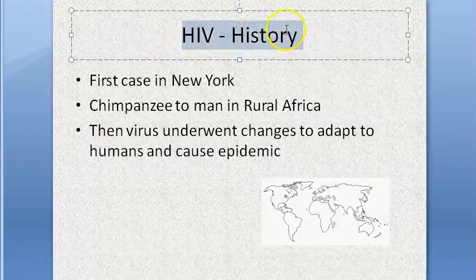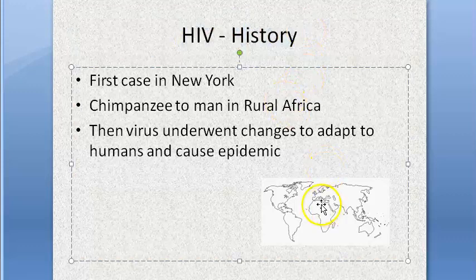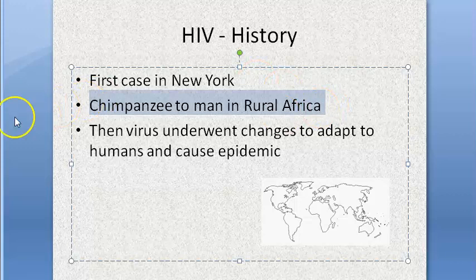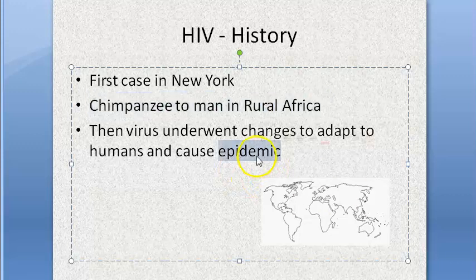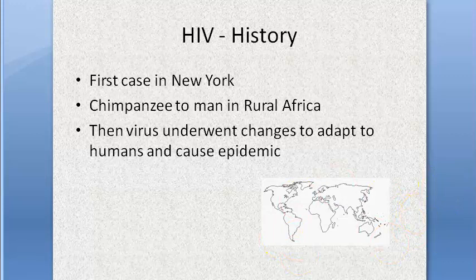In the history of HIV, the first case was in New York. The disease originated from chimpanzees and came to humans in rural Africa, where the virus underwent adaptation and has now caused a global epidemic.